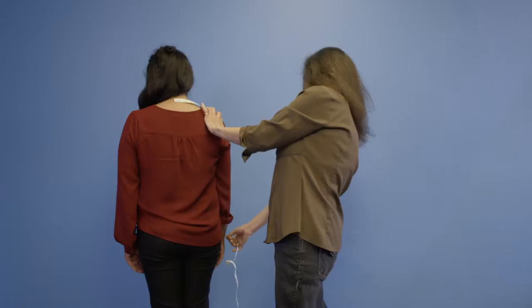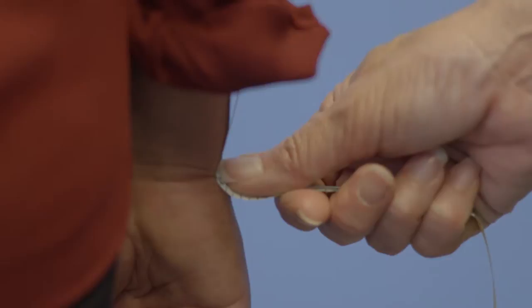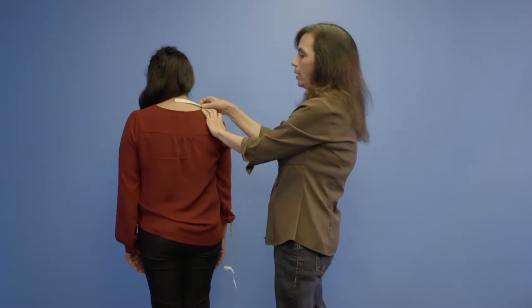Hold the tape there, then take the tape all the way down the arm to the wrist bone. The arm needs to be relaxed down at the side, and it's about 30 inches.